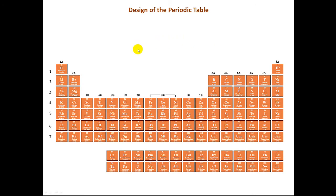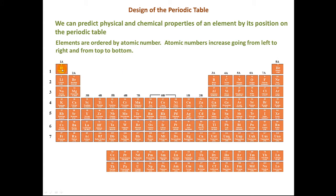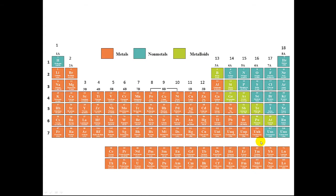Now let's take a look at the periodic table. The way the periodic table is organized allows us to predict physical and chemical properties of the elements, and that's just based on the position of the element on the periodic table. Again, as I said, elements are ordered by atomic number. Atomic numbers increase going from left to right and from top to bottom.